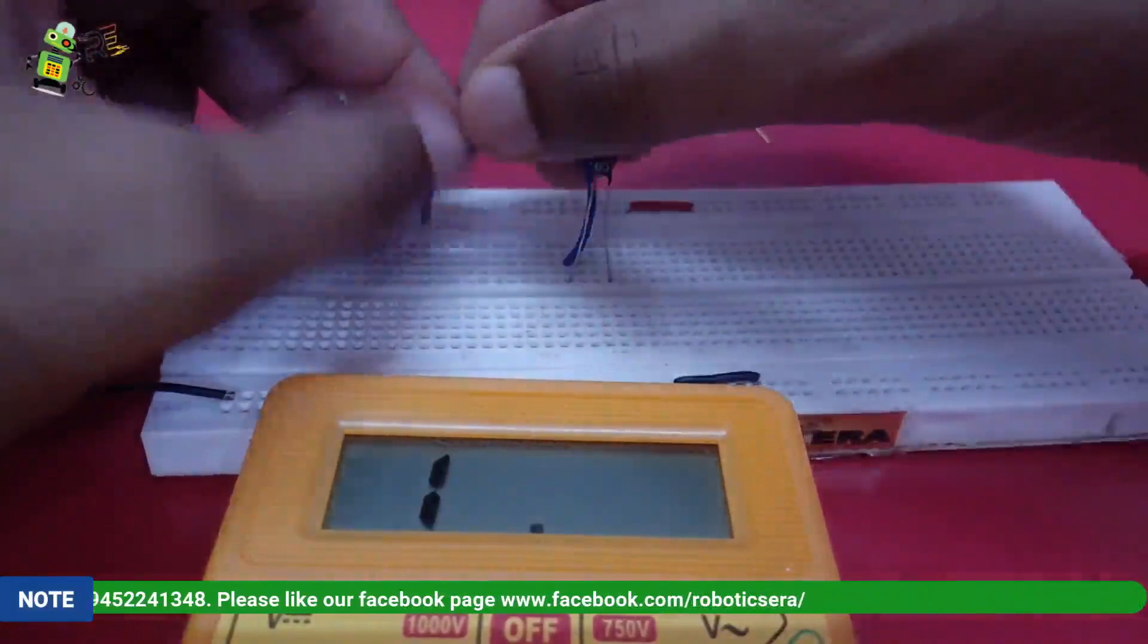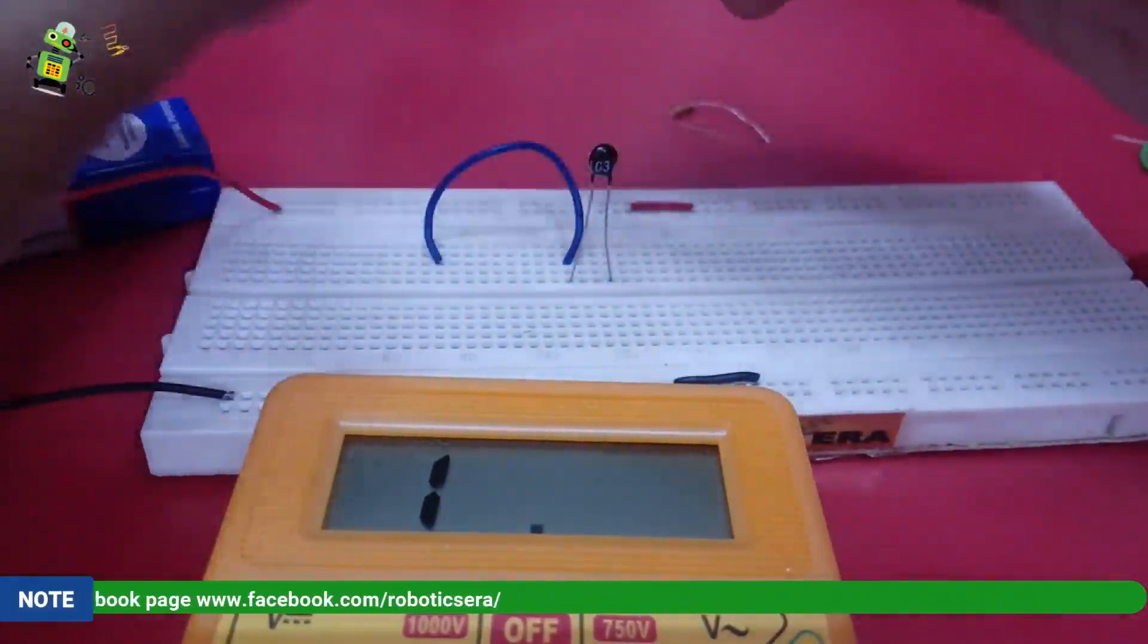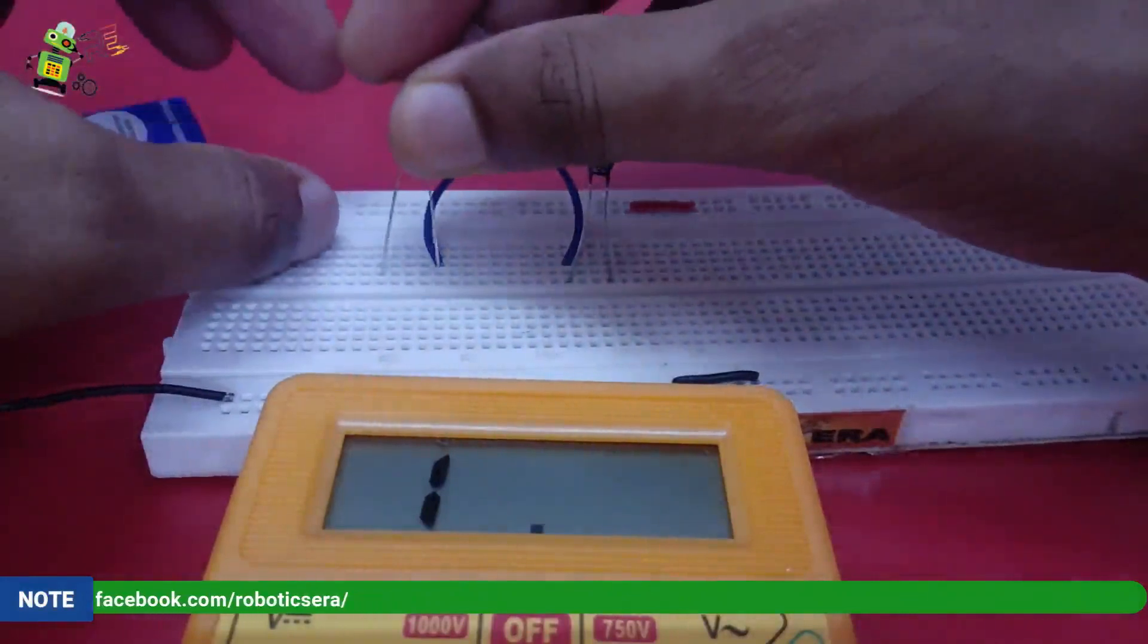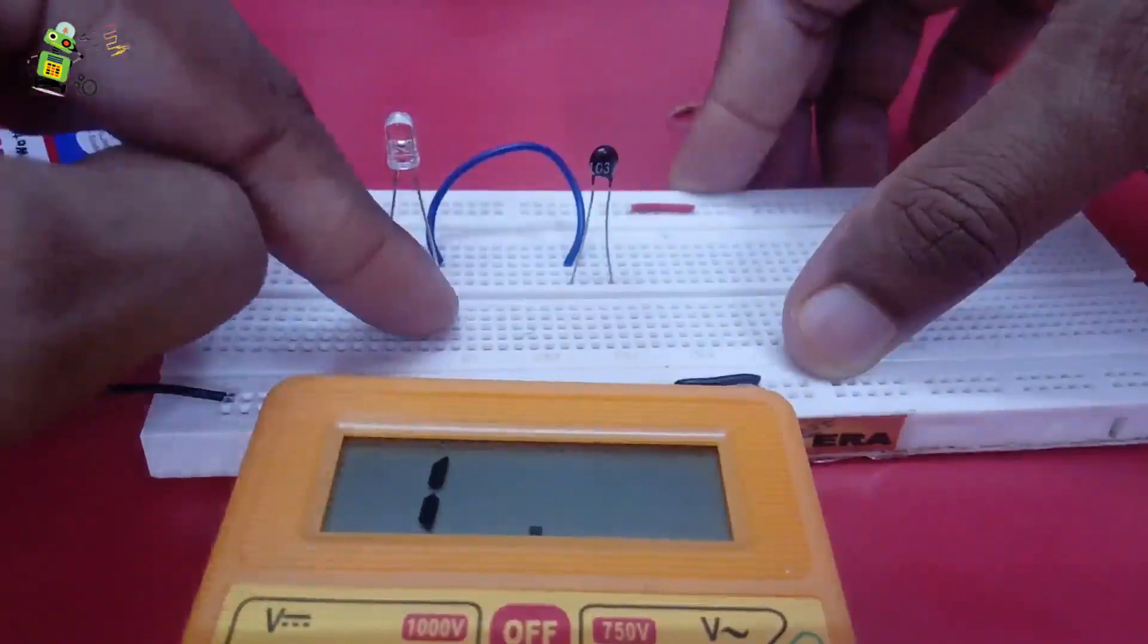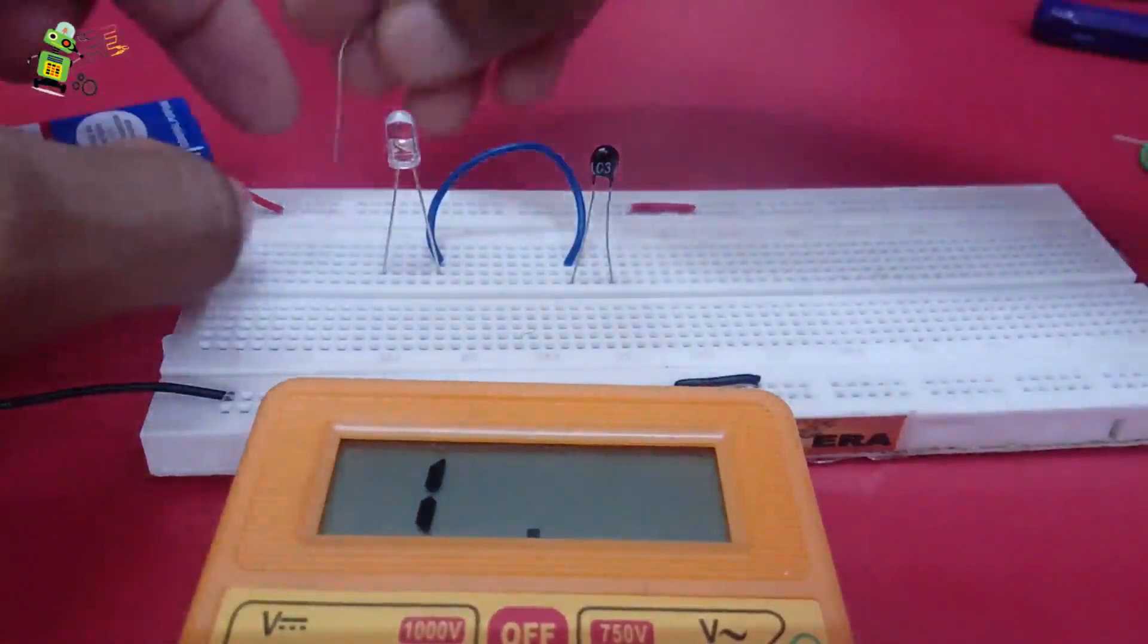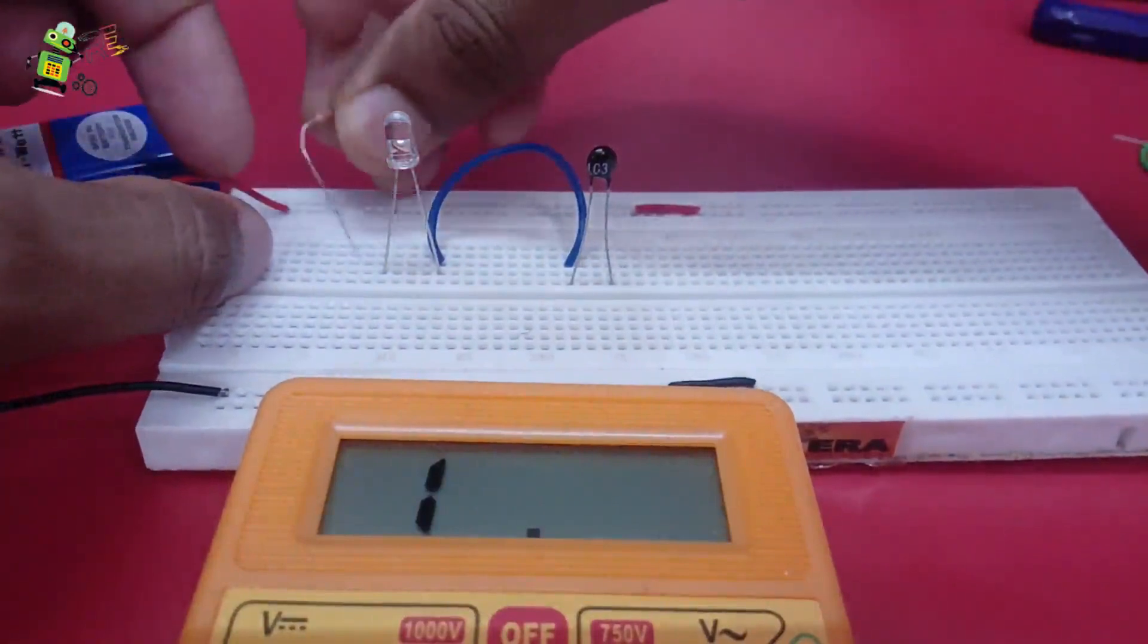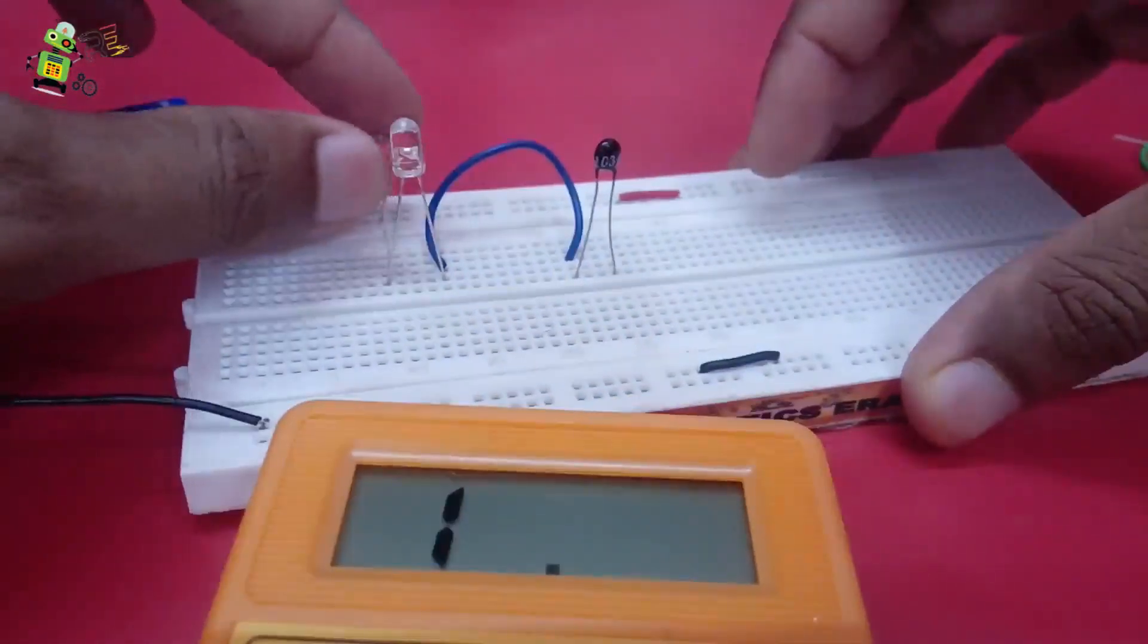I am using this wire. Now this positive and negative terminal like this. Positive is this side, negative is this side. I have added a resistor from the positive terminal of the battery to the positive terminal of my LED.